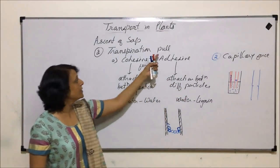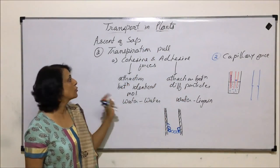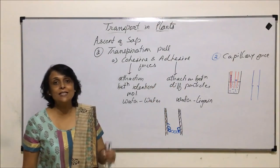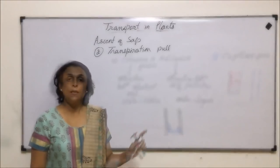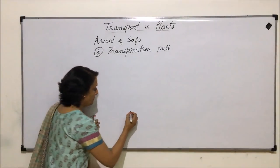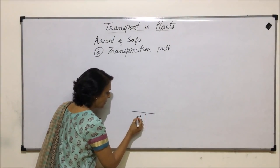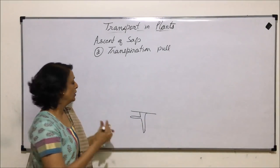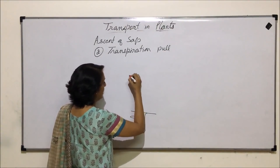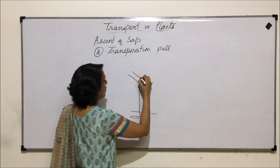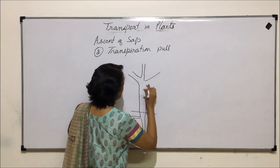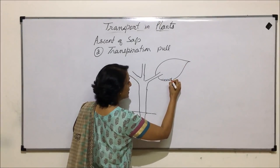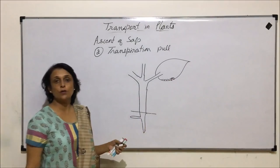Now, using these forces, how is the pull created? Let us draw a diagram to understand how this pull is created and how these forces help the water column to rise up to the height of few feet to meters. We are talking of the roots absorbing water, and we want to see how the water moves up to the topmost level. This is the stem with its branching, and here is a leaf with its epidermis and a stomata.